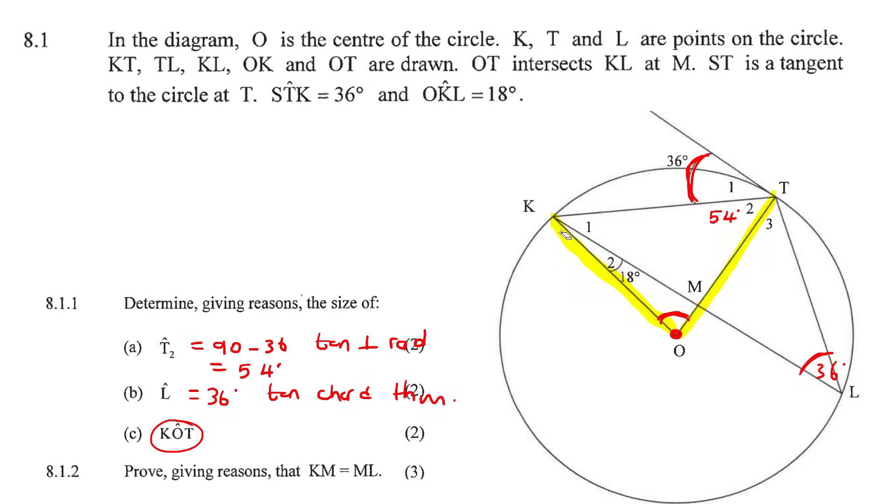So what that means is that this chord is making this angle, but we know that this chord is also making this angle. So one of them is on the circumference, and one of them is at the center, and we know that the angle at the center is two times the angle at the circumference. So KOT is going to be double this angle, so it's going to be 72 degrees, and the reason is angle at center equals two times angle at circumference.